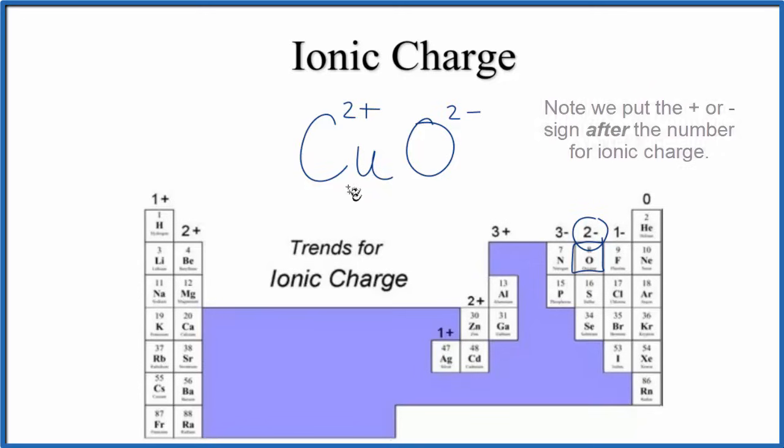That's its ionic charge. We would say for the name copper(II) oxide, and the 2 would be a Roman numeral in parentheses after the word copper. Let's try another one, maybe a little more complicated.